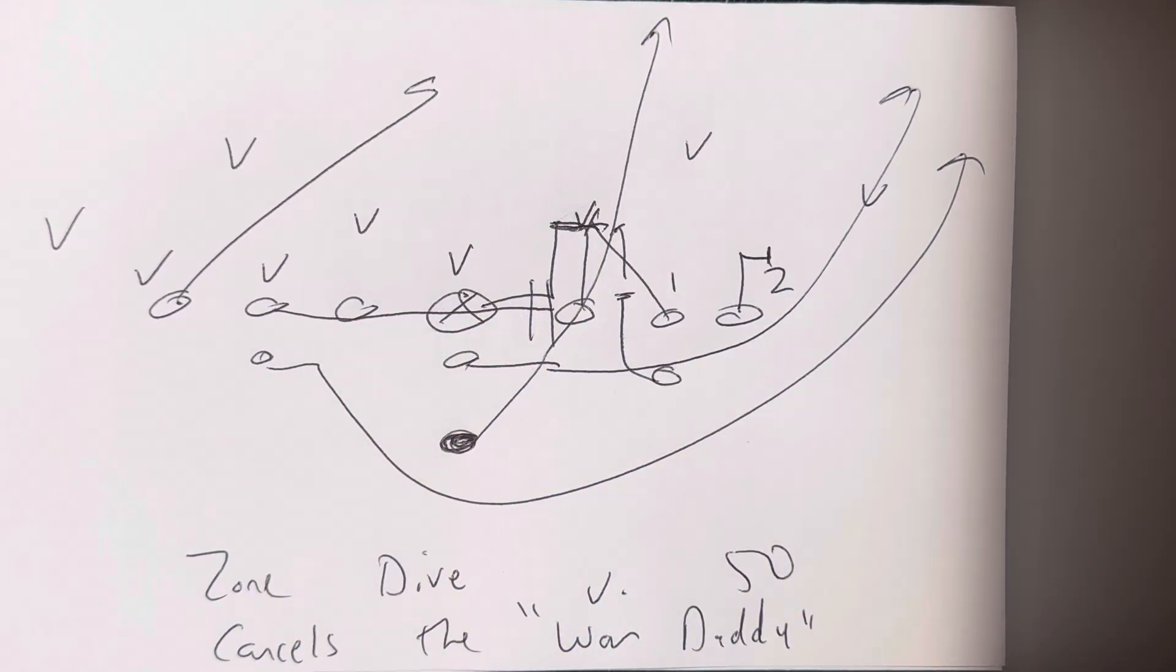The zone dive does exactly that, because it looks like an inside veer type of run, but it's actually run through the playside hip of the tackle. So, if it's zone dive to the right, it's the right hip of the right tackle, and then through the end zone after that.